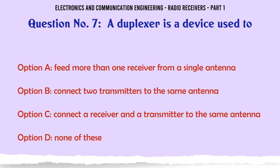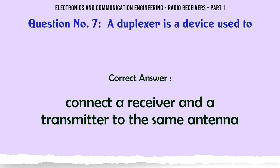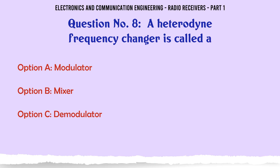A duplexer is a device used to: a. Feed more than one receiver from a single antenna. b. Connect two transmitters to the same antenna. c. Connect a receiver and a transmitter to the same antenna. d. None of these. The correct answer is connect a receiver and a transmitter to the same antenna.